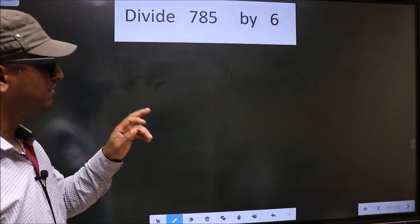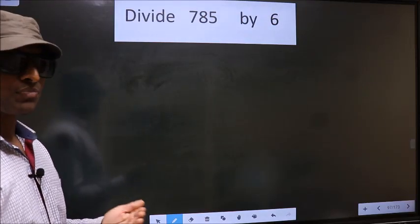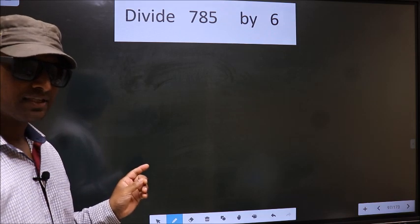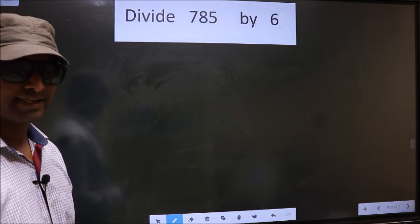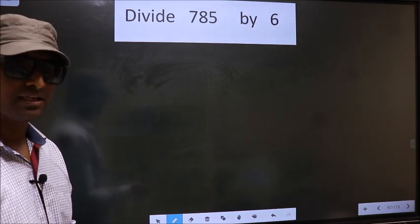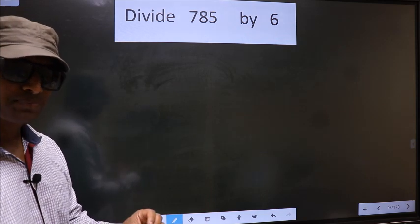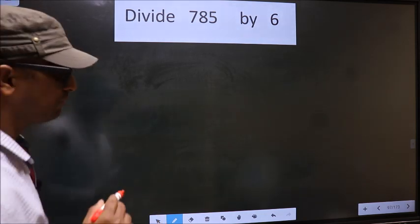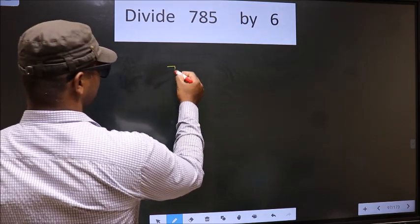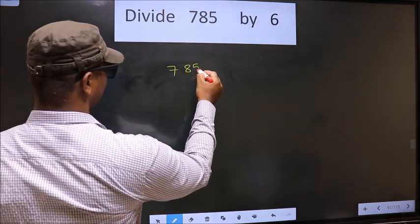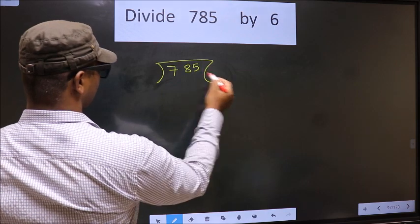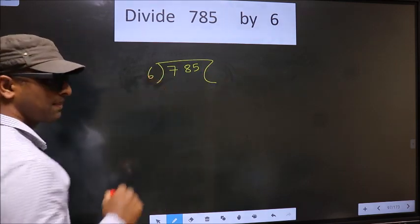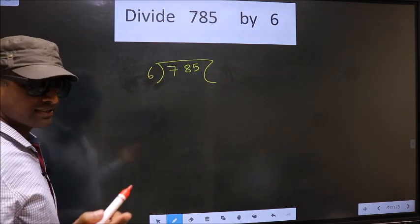Divide 785 by 6. While doing this division, many do this mistake. What is the mistake that they do? I will let you know. But before that, we should frame it in this way. That is 785 and 6 here. Ok, next.